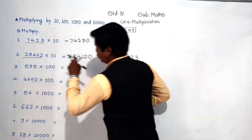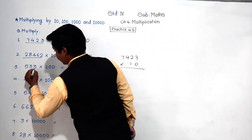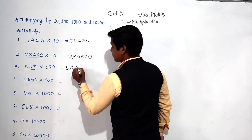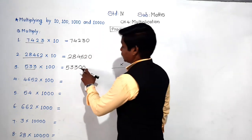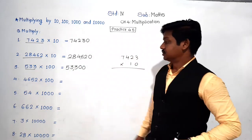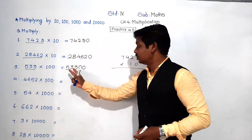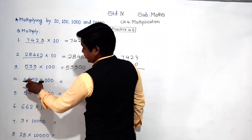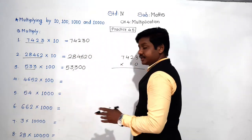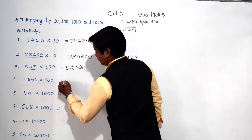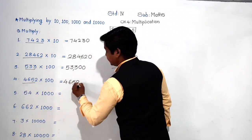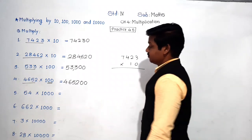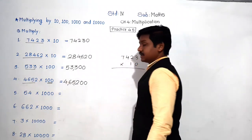Next: 533 into 100. Write 533 as it is and add two zeros — the answer is 53300. Then 4652 into 100: write 4652 as it is, and since 100 has two zeros, add two zeros at the end. The answer is 465200.